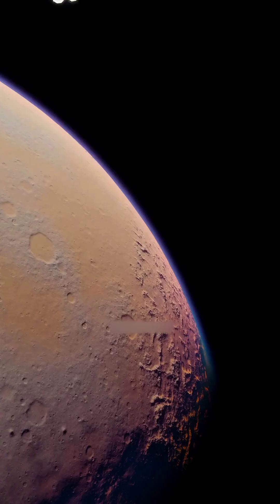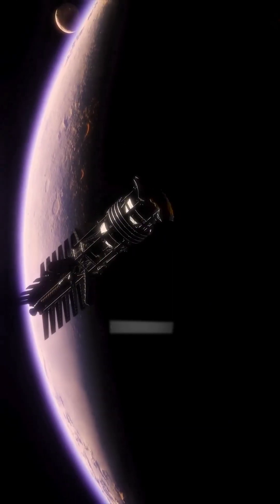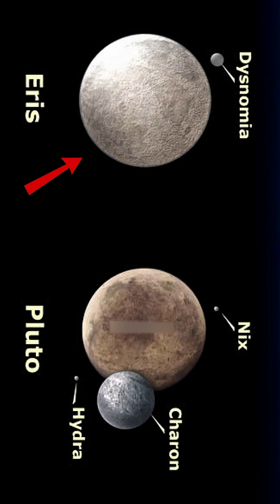Eris was discovered in 2005, and before its discovery, astronomers believed that any planet-like object beyond Pluto would be much smaller. However, when Eris was observed, it was almost the same size as Pluto.